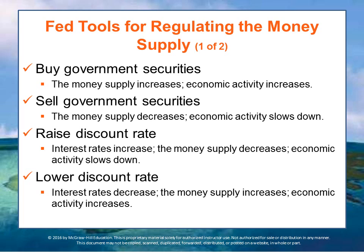Those four tools are open market operations, reserve requirements — how much banks have to hold in reserve — the discount rate, which is the interest rate for overnight exchanges of money with banks, and credit controls. There is generally a lag of 6 to 18 months before the effect of these tools actually impacts or changes the economy overall.